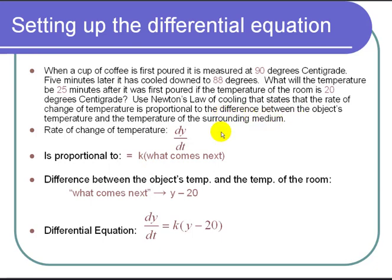It says the difference between the object's temperature and the temperature of the surrounding medium. Well, the object's temperature, that's changing with time, that's y, our variable. And the temperature of the surrounding medium, well, the room is 20 degrees centigrade. So it's y minus 20. So putting this together, we get dy over dt is equal to k times y minus 20.